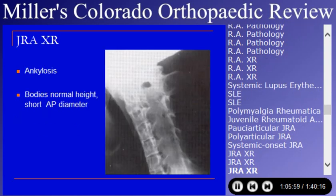Spine involvement in JRA is common and different from adult arthritis — they tend to become ankylosed with long, thin vertebrae, which is the classic X-ray picture of the JRA spine.